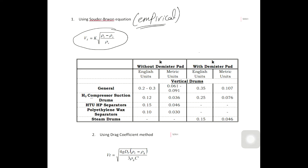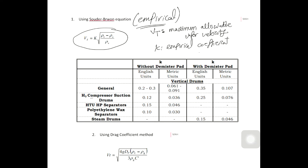The Vt is the maximum allowable vapor velocity. The K is the empirical coefficient and has the same dimensions as velocity. The following table contains the values of K. If this separator is being used in general surface service, the value of K is 0.2 to 0.3 in metric units.